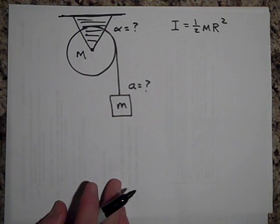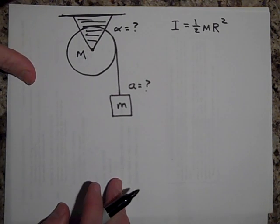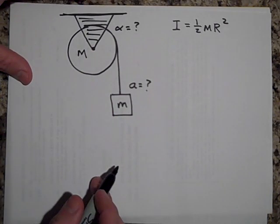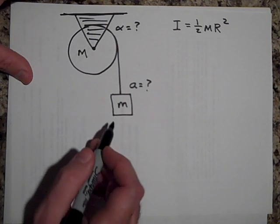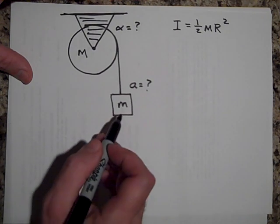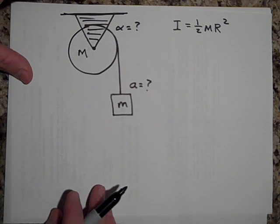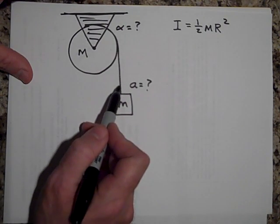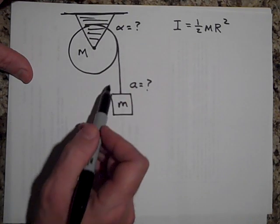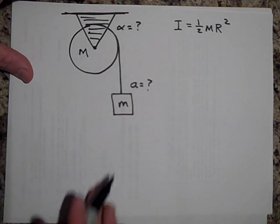Okay, now let me tell you what people do with a problem like this and it's not right. If you think that when you let go of this, this is going to descend and accelerate down, and if you think that the tension in this rope is going to be mg, you'd be wrong because the tension in this rope is less than mg. That's why it's accelerating down. So don't go and say that the torque being provided by this string is mg times R. The torque is not mg times R because the tension in this rope is not equal to mg.